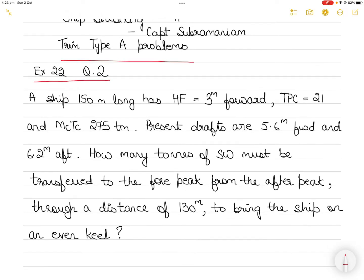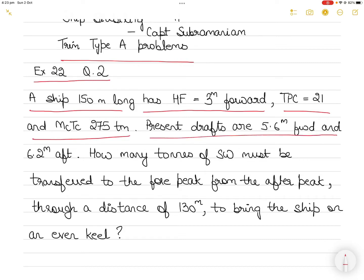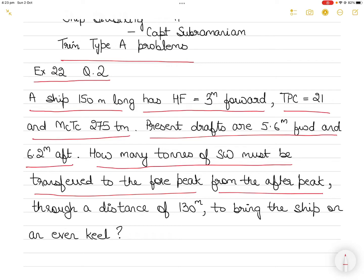The question is that there is a ship which is 150 meters long. It has HF 3 meters forward, TPC 21, and MCTC 275. Present drafts are 5.6 meters forward and 6.2 meters aft. You have to find out how many tons of seawater must be transferred to the fore peak tank from the aft peak tank through a distance of 130 meters.